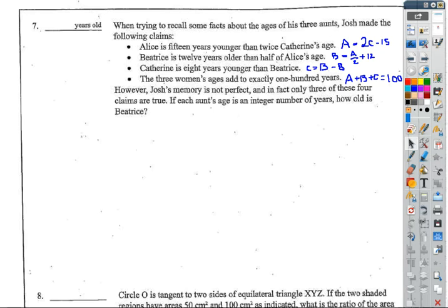So number 7. When trying to recall some facts about the ages of his three aunts, Josh made the following claims: Alice is 15 years younger than twice Catherine's age, A = 2C - 15. Beatrice is 12 years older than half of Alice's age, B = A/2 + 12. Catherine is 8 years younger than Beatrice, C = B - 8. And the three women's ages add up to exactly 100 years, A + B + C = 100.